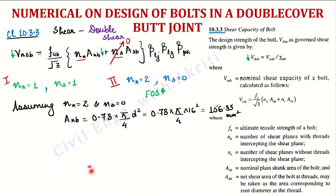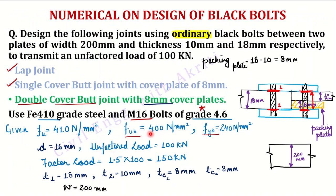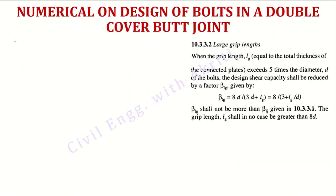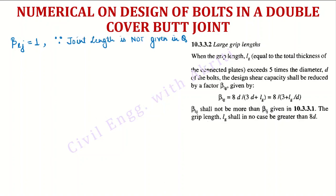The FUB value is 400 N/mm² because we use grade 4.6 bolt. Now, for reduction factors: first, β_LJ. I assume β_LJ = 1 because joint length is not given.